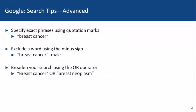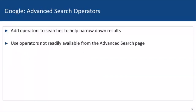Do not put a space between the minus sign and the word. For example, to find pages on breast cancer but not male breast cancer, use the minus sign in front of the term "male." Use the OR operator to expand or broaden your search. Note that if you write "or" with all lowercase letters, Google interprets the word as a search term instead of an operator.